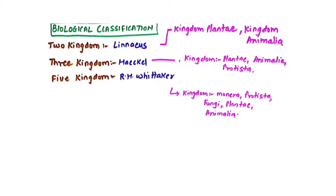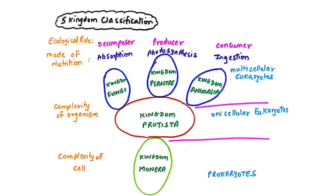The most widely accepted biological classification was given by R.H. Whittaker — the five-kingdom classification. The entire living world is divided into: Monera, Protista, Fungi, Plantae, and Animalia. The only drawbacks were that viruses didn't get any place in Whittaker's classification, and Euglena — which shows both autotrophic and heterotrophic nutrition — also didn't fit into Whittaker's classification.